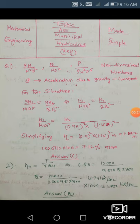The first question: he has given h1, n1, d1 and is asking you to find out h2, the head at the second position. The three important non-dimensional numbers are gh/n²d², q/nd³, and p/ρn³d⁵.